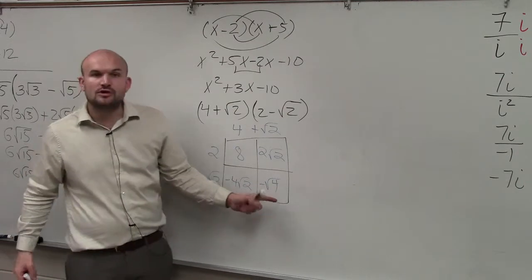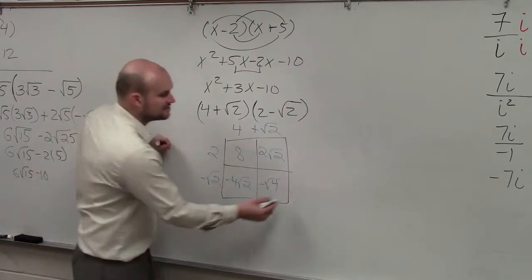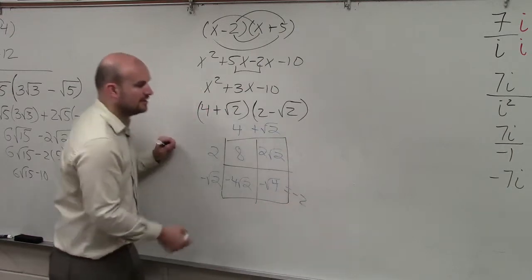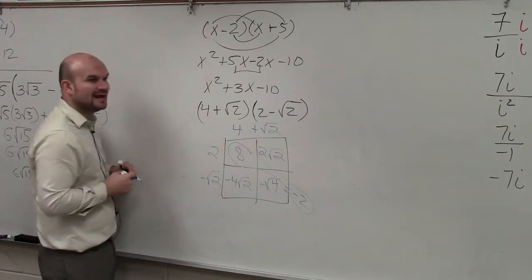Now hopefully you guys know that the square root of 4 is 2 times a negative. It's just going to leave you with a negative 2. Now, these are both numbers. So I can combine them.